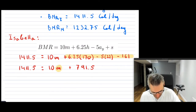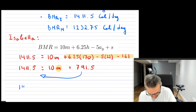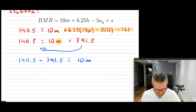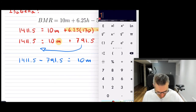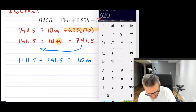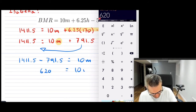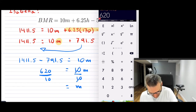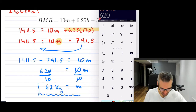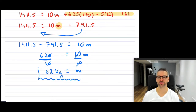Now solving for m: bring 791.5 to the other side, so 1411.5 minus 791.5 equals 10m. That gives 620 equals 10m. Dividing both sides by 10, the 10s cancel, and we get m equals 62. So Isabella's mass is 62 kilograms.